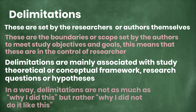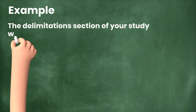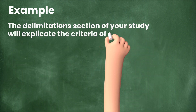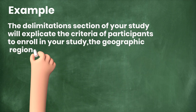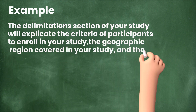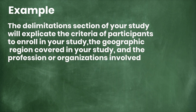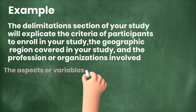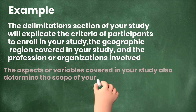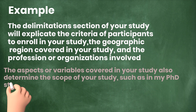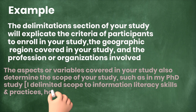In a way, delimitations are not so much about why I did this, but rather why I did not do it like this. The delimitation section of your study can explicate the criteria of participants to enroll in your study, the geographic region covered, and the profession or organizations involved. Moreover, the aspects or variables covered in your study also determine the scope. For example, in my PhD study, I delimited the scope to information literacy skills and practices.